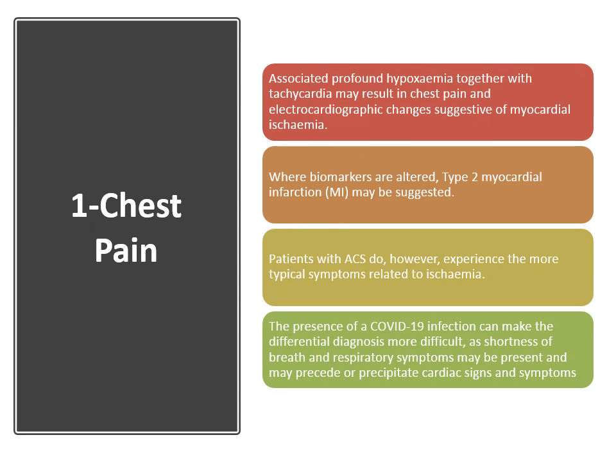Associated profound hypoxia together with tachycardia may result in chest pain and ECG changes suggestive of myocardial ischemia. When biomarkers are altered, type 2 myocardial infarction may be suggested. Patients with acute coronary syndrome usually experience more typical symptoms related to ischemia. The presence of COVID-19 infection can make the differential diagnosis more difficult, as shortness of breath and respiratory symptoms may be present and may precede or precipitate cardiac symptoms and signs.